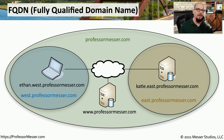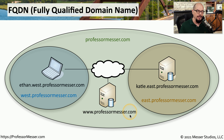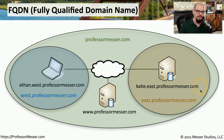Visually, my fully qualified domain names, or FQDNs, might look something like this. We have the entire domain of professormesser.com. Within professormesser.com, I have a web server at www.professormesser.com. I might have a west and an east side. Within the west, I have a device called ethan.west.professormesser.com, and in the east, katie.east.professormesser.com. You can see how this hierarchy allows us to create fully qualified domain names that not only identify what a device is, but perhaps where it's located as well.